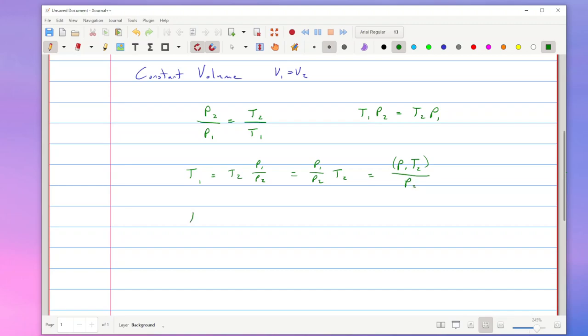And we can do a similar thing, I'm not going to show every single step, to solve for T2, P1, or P2 in terms of the other values. You have to know at least three of these to be able to find the fourth one.